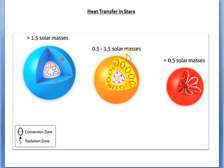For stars in the intermediate mass range, which includes our Sun, hydrogen-to-helium fusion occurs primarily by the proton-proton chain. In this case we do not have a steep temperature gradient, so radiation dominates in the inner portion. However, the outer portion of solar-mass stars is cool enough that hydrogen is neutral and thus opaque to ultraviolet photons, so convection dominates. Therefore, solar-mass stars have radiative cores and convective envelopes in the outer portion.